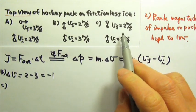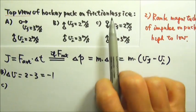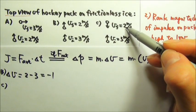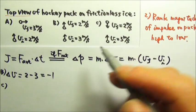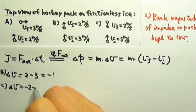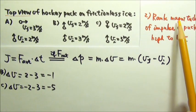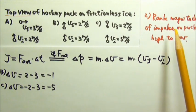If I look at scenario c, that's final minus the initial. And if I say that way is positive, then that's negative 2 minus positive 3. So the delta v is the final velocity negative 2 minus 3, which is negative 5. Because we're just ranking the magnitude of the impulse, we're just looking at the magnitude of these two. So c has a larger magnitude for impulse than b.